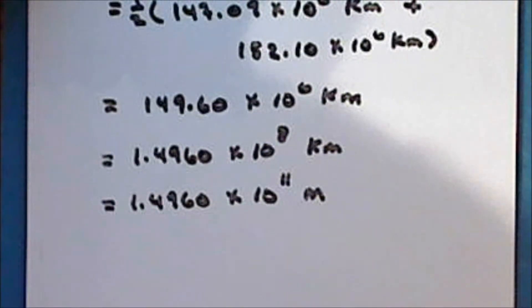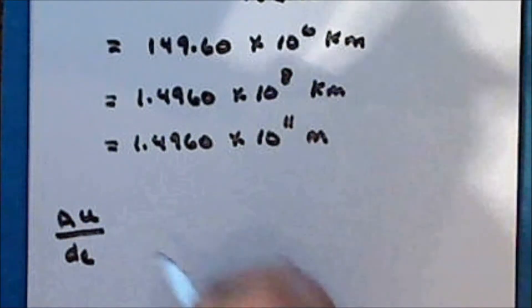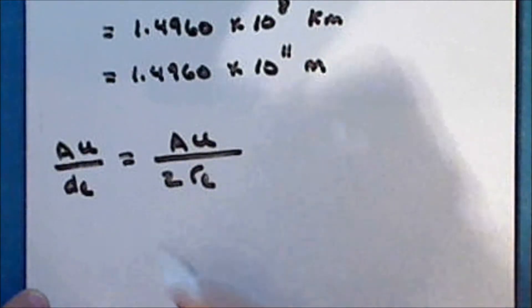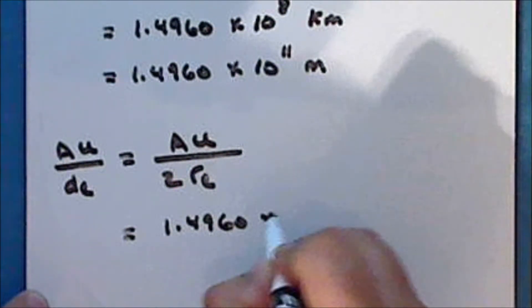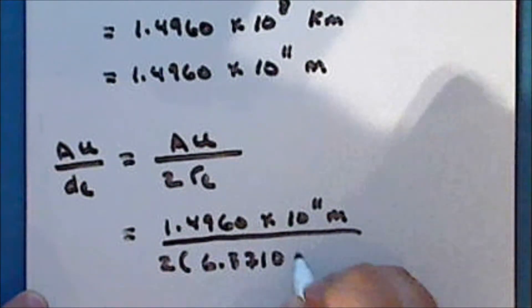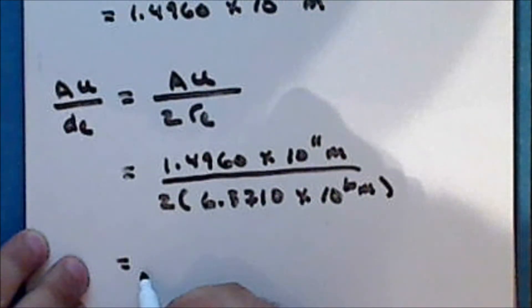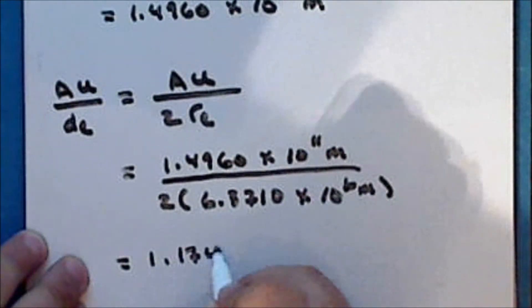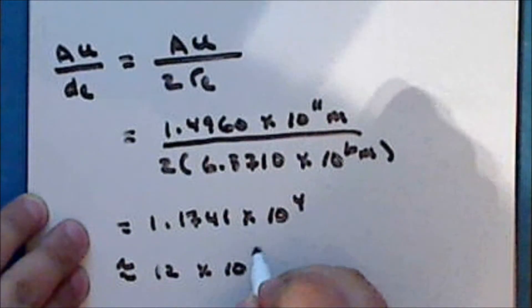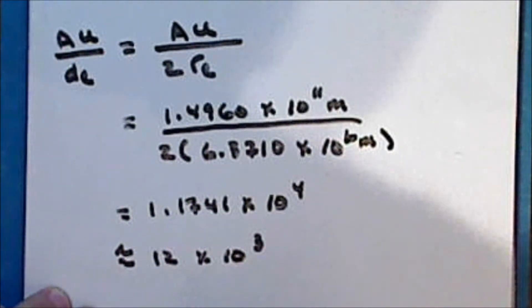Now this is a huge distance. Let's compare this to the diameter of the Earth. The ratio of one astronomical unit to the diameter of the Earth is the ratio of one astronomical unit to twice the radius of the Earth, which is 1.4960 times 10 to the eleventh meters divided by 2 times 6.3710 times 10 to the sixth meters. To five significant figures, this is 1.1741 times 10 to the fourth, approximately 12,000. That is, one astronomical unit is about 12,000 times the diameter of the Earth.